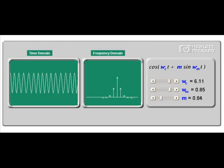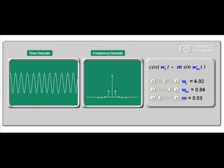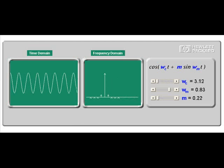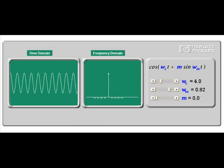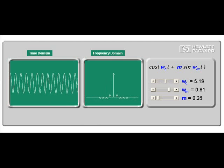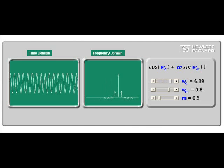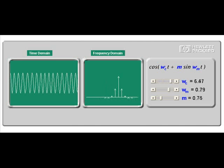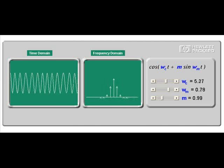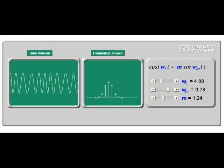And we can see here that the sideband is centered on the carrier frequency as it sweeps between left and right. Here we have no sidebands and now we're beginning to have sideband components. And as the modulation index increases, we have more sideband components.